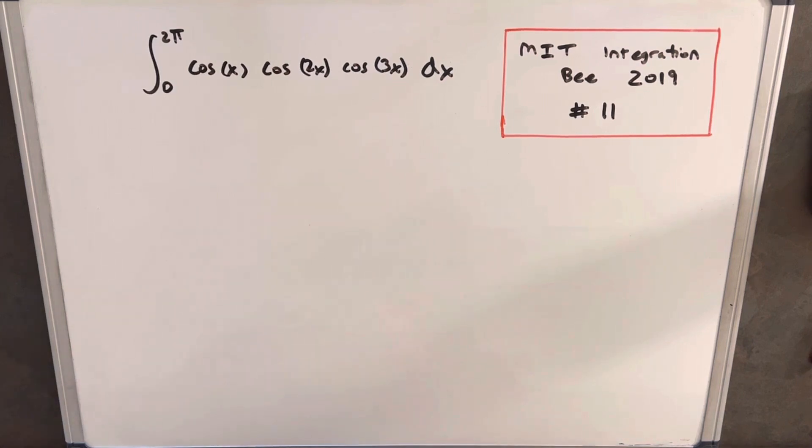Hey, we have another integral on the board from the MIT Integration Bee. This is from 2019, problem number 11. We have the integral from 2 pi to 0 of cos x, cos 2x, cos 3x, dx.